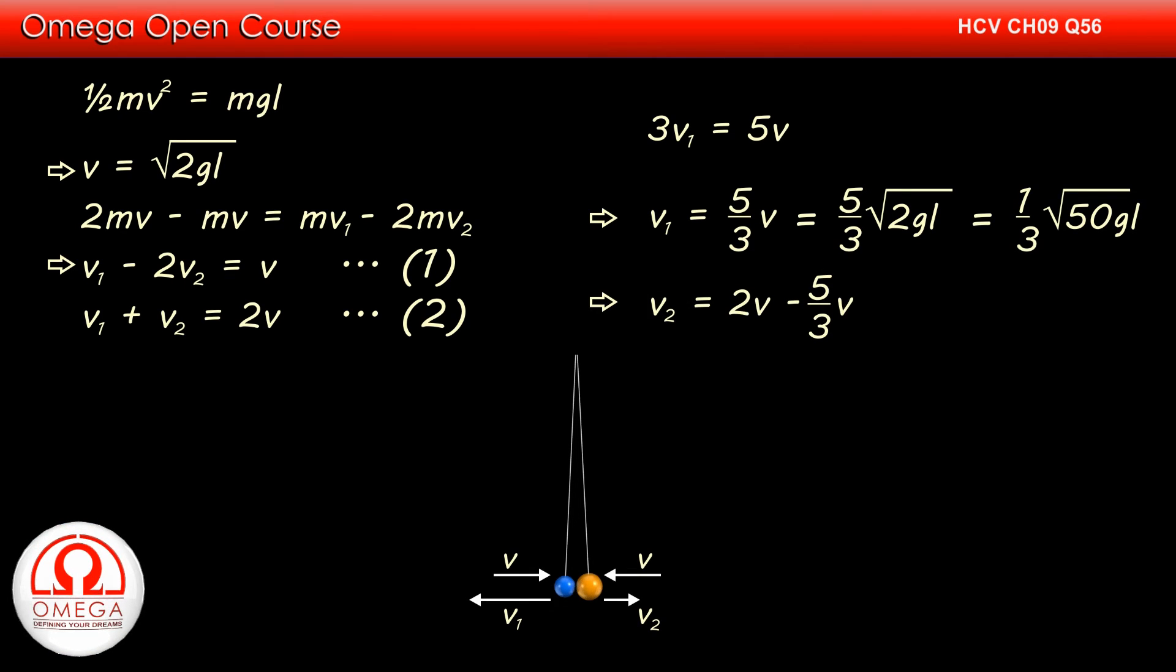Putting the value of v1 in equation 2, we get v2 is equal to 2v minus 5 by 3 v, that is v by 3. Putting the value of v, we get v2 is equal to 1 by 3 into root 2gl. These are the answers to part A of the question.